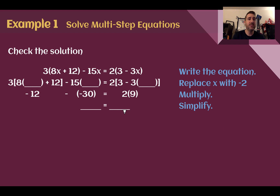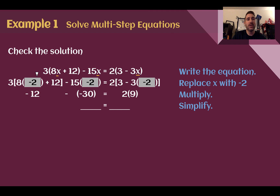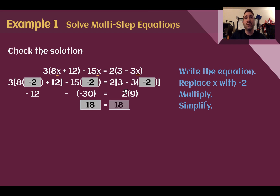Now that we have our solution, we should always double check. We got negative 2, so let's put that in every place there's an x — there are three places, so we should have three substitutions of negative 2. We changed the curved parentheses to brackets since we're putting substituted values in parentheses as well — they mean the same thing. So: 8 times negative 2 is negative 16, plus 12 is negative 4, times 3 is negative 12. In the middle, 15 times 2 is 30 and we're subtracting it. On the right, 3 minus negative 6 equals 9, then times 2. All of this gives us 18 equals 18 — a true statement, confirming our solution is correct.